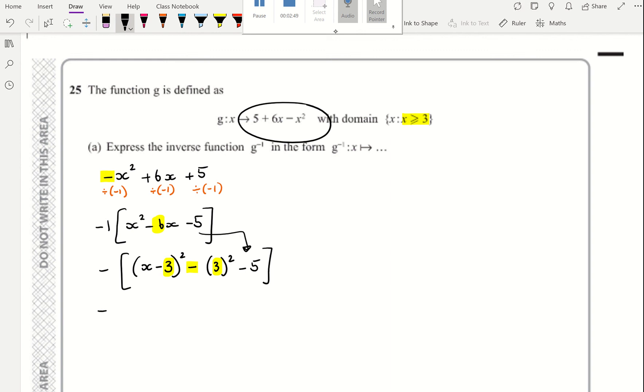This is minus x minus 3 squared. This becomes minus 9 minus 5, which is minus 14. Then I'm going to multiply the negative 1 in to both parts. Nothing inside the bracket changes, because you're not multiplying the negative 1 by the bracket.